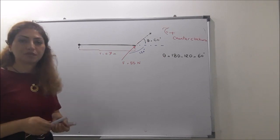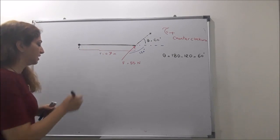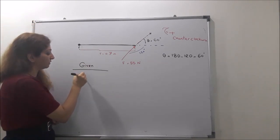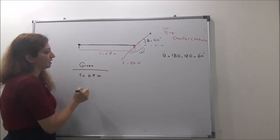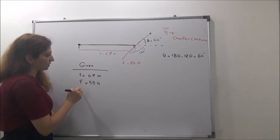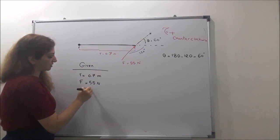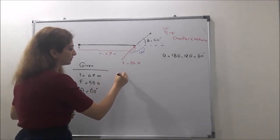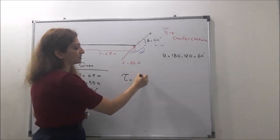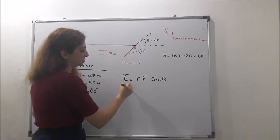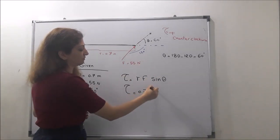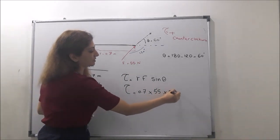We have to calculate the torque of this force which is applied. First, as usual, write the given data: the radius or distance equals 0.7 meters, the force applied is 55 Newtons, and the angle between the force and the radial vector, theta, is 60 degrees. So, calculate the torque of this force on the object. The torque equals R times F times sine theta, which is 0.7 meters times 55 Newtons times sine 60 degrees.